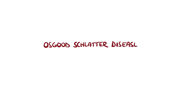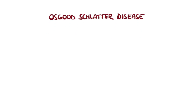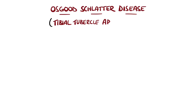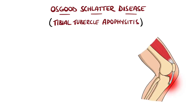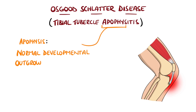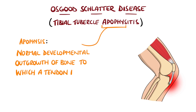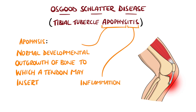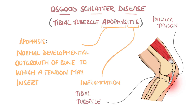Osgood-Schlatter disease, also known as tibial tubercle apophysitis, is a condition characterized by anterior knee pain due to inflammation of the apophysis. An apophysis is a normal developmental protuberance from a bone that provides an insertion site for tendons, in this case the patellar tendon, onto the tibial tubercle.